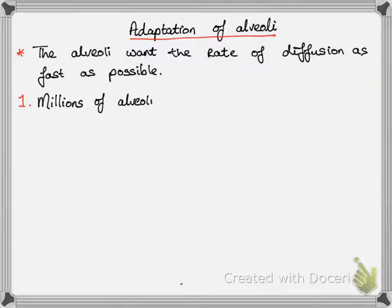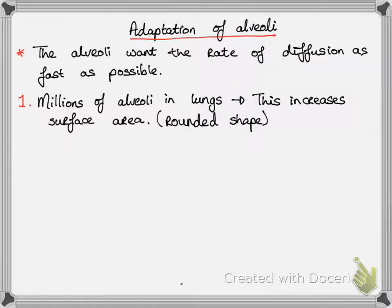And the first thing that they have is that there are millions of alveoli in the lungs. So with millions of them, this increases the surface area, and also the rounded shape increases the surface area and therefore allows faster rate of diffusion.